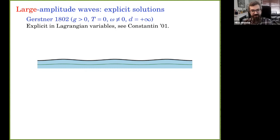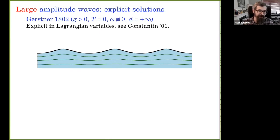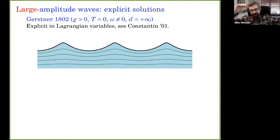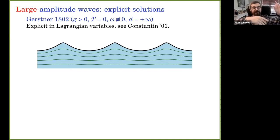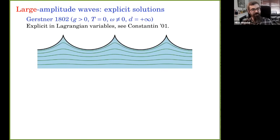Here are some pictures of Gerstner waves. For a relatively small-amplitude wave, I've drawn a representative streamline in green. As I increase the amplitude, the bottom part of the picture doesn't change — the streamlines just stick around. This reflects a peculiar property of Gerstner waves: you can take any particle trajectory deep in the fluid, declare it to be the free surface, and still have a solution. There's no deep physical reason; it's an interesting mathematical fact.